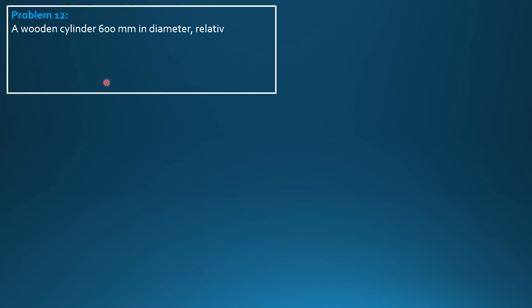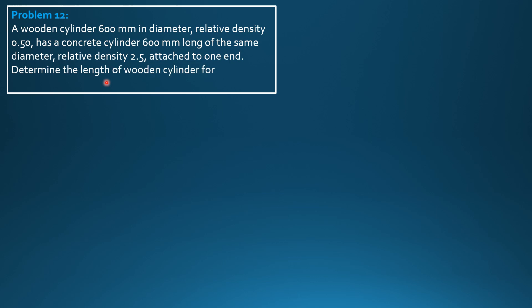A wooden cylinder, 600 mm in diameter, relative density 0.5, has a concrete cylinder 600 mm long of the same diameter, relative density 2.5, attached to one end. Determine the length of wooden cylinder for the system to float in stable equilibrium with axis vertical.